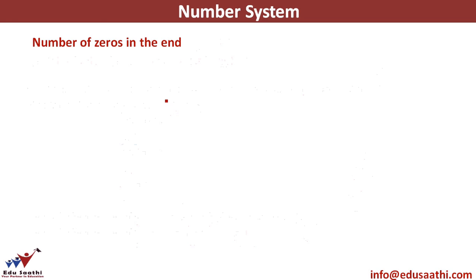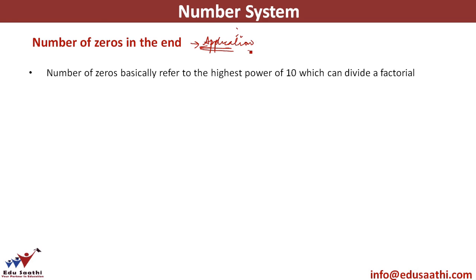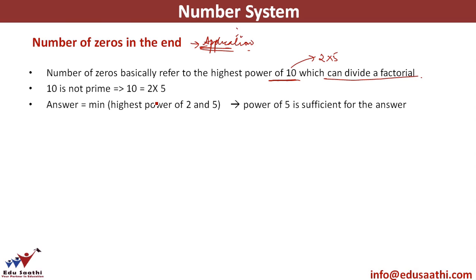If you have to calculate the number of zeros in the end, this is basically the application of just what we have studied. Highest power of a factorial application is finding out the zeros in the end. So number of zeros basically refers to the highest power of 10 which can divide the given factorial. 10 can be split into two co-prime factors 2 and 5 because 10 is not a prime. So we will find out the highest power of 2. We will find out the highest power of 5. Whatever is the minimum out of 2 would be my answer. Generally, power of 5 is sufficient for the answer. I am talking about generally power of 5 would be sufficient for the answer because power of 5 would always come out to be lesser than the power of 2.